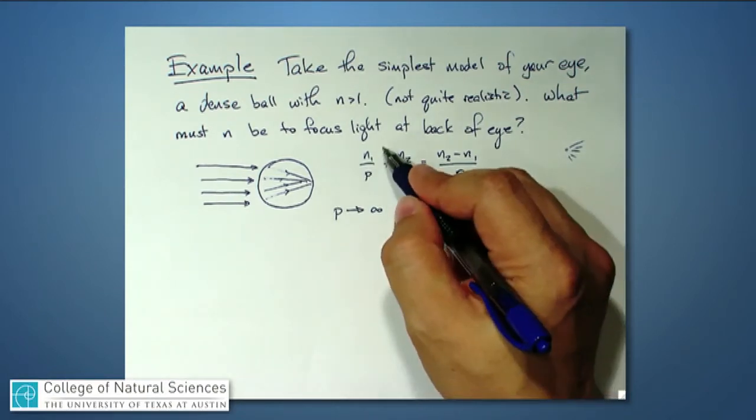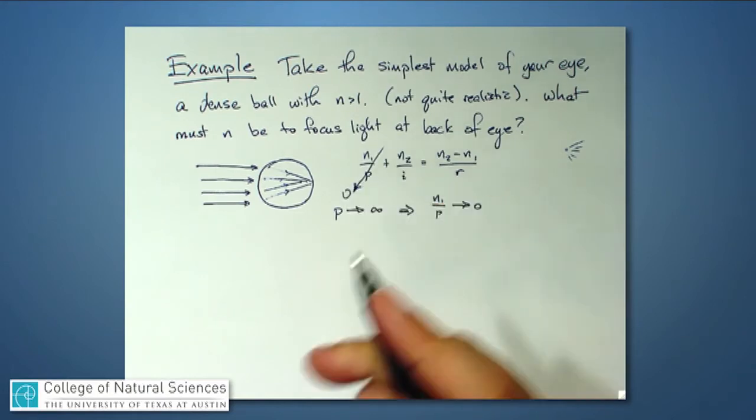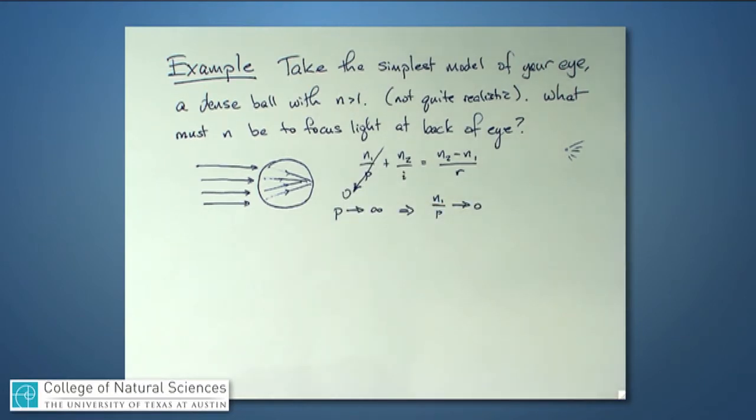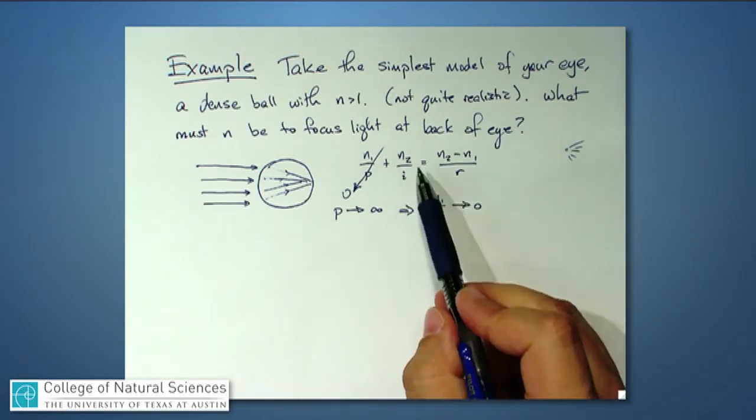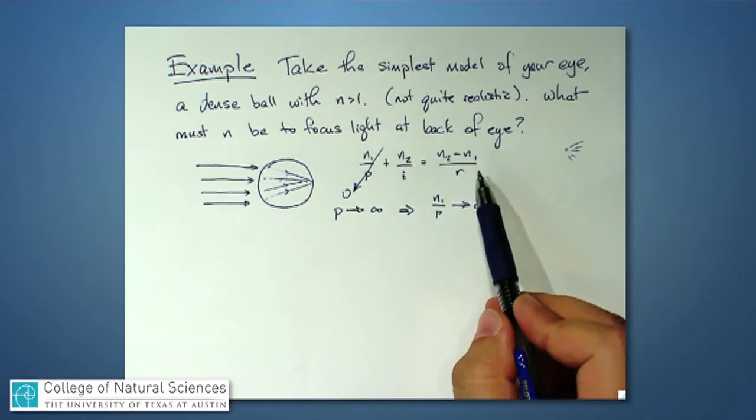So that means I get to cancel that first term, or set it to zero, because P is infinitely large. Now I have N2 over I is equal to N2 minus N1 over R.